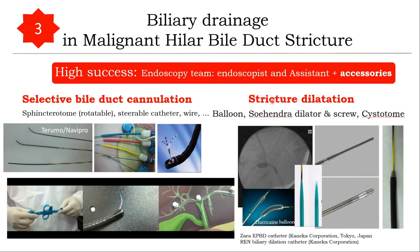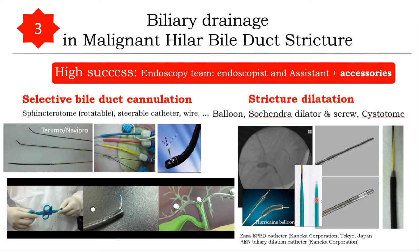The second technique is stricture dilation. Sometimes the wire can go in but the catheter cannot. You can use a screw retrieval to screw in through tight stricture, or standard bougie dilation. In a particular situation, I recommend using a needle-tipped Cystotome to cut through to achieve stricture dilation. Alternatively, you can use the outer taper tip of the catheter to succeed at structure dilation, followed by hurricane balloon dilation.